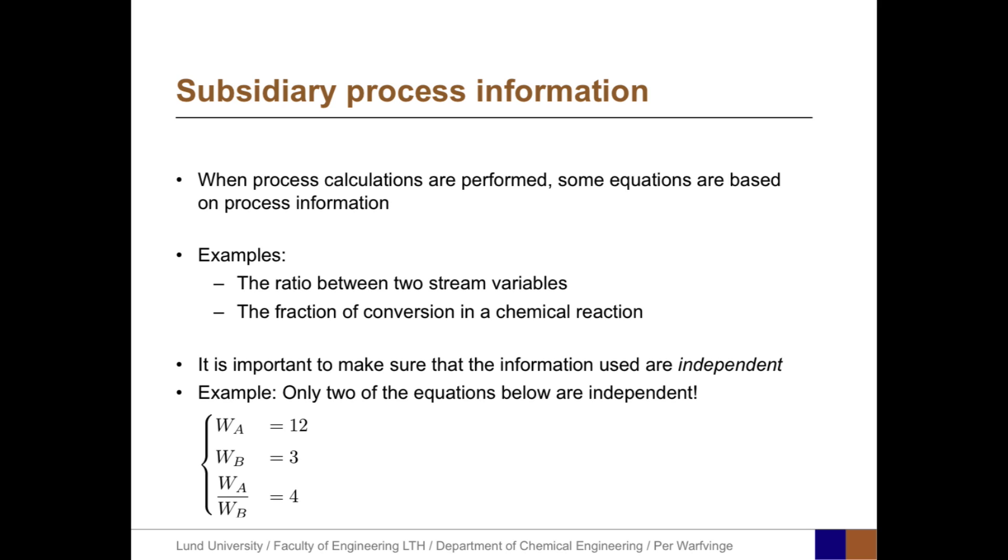If WA equals 12, and WB equals 3, and we also have the information that the ratio between WA and WB is 4, then only two out of these three equations are independent. The third one can always be deduced from two other ones.